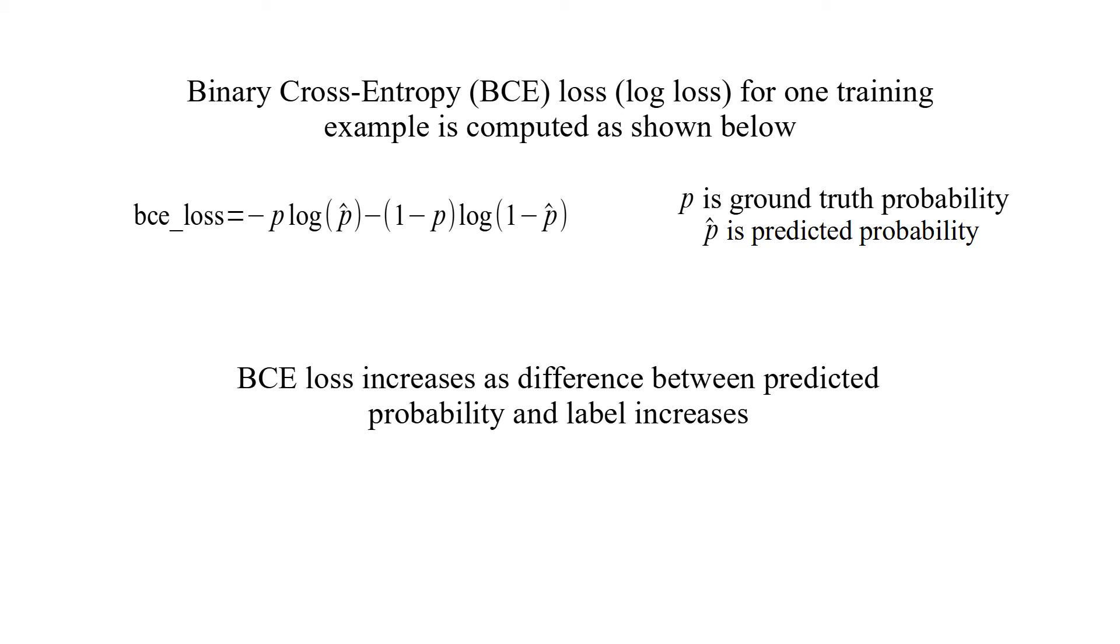Loss increases as difference between predicted probability and ground truth probability increases. Label is also called ground truth or target output.